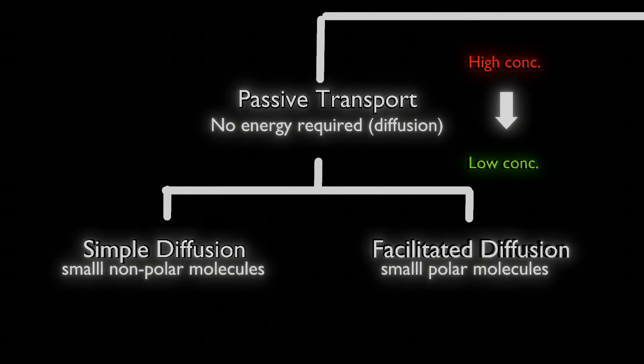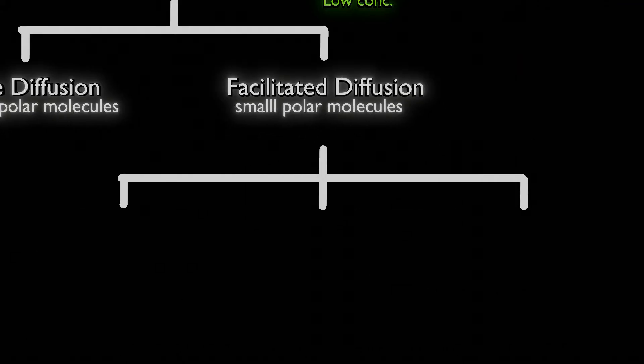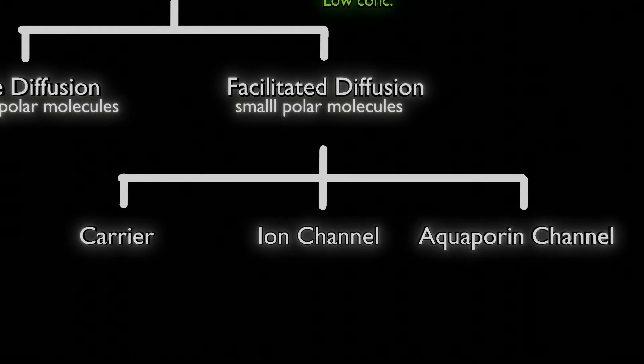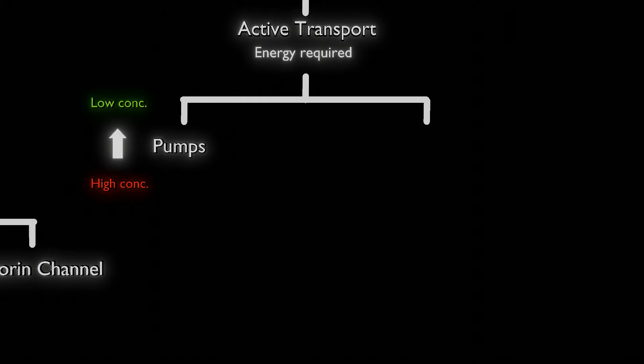Simple diffusion and facilitated diffusion are part of passive diffusion and transport their specific molecules. Within facilitated diffusion, you have carriers, ion channels, and aquaporin channels, and those are the proteins that move those molecules. Under active transport, we talked about pumps, specifically the sodium-potassium pump last time.